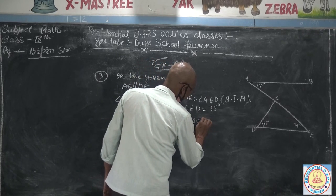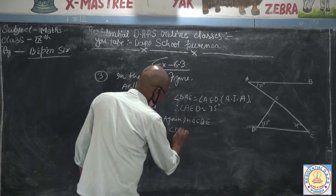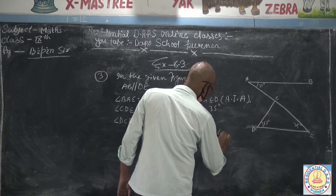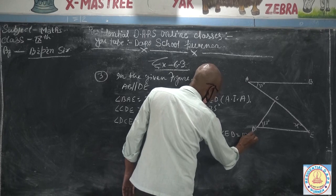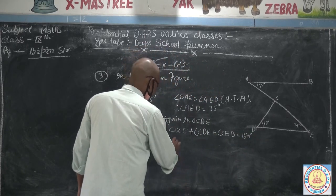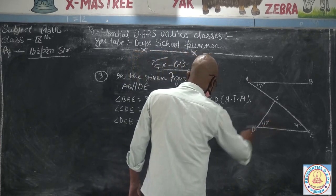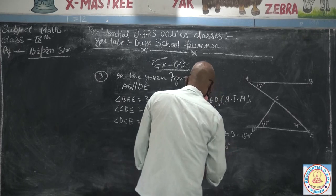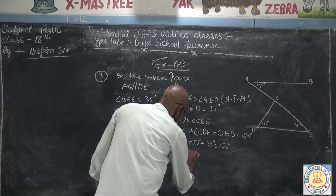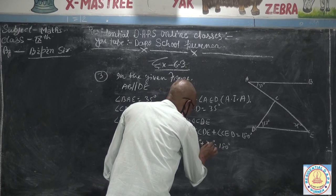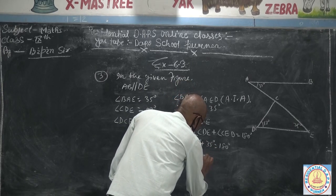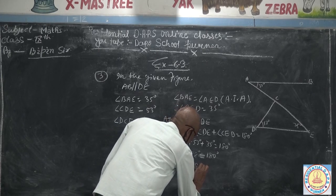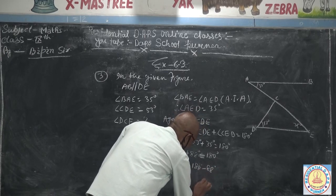In triangle CDE, angle DCE plus angle CDE plus angle CED is equal to 180 degrees. Angle DCE is not given, so: angle DCE plus 53 plus 35 equals 180. Angle DCE plus 88 equals 180, so angle DCE equals 92 degrees.